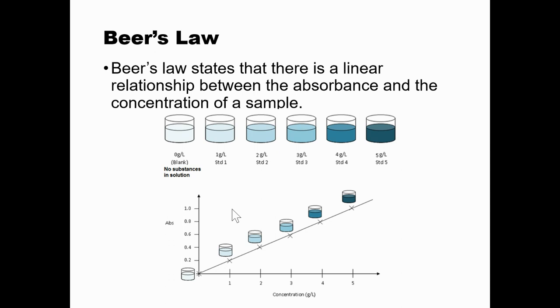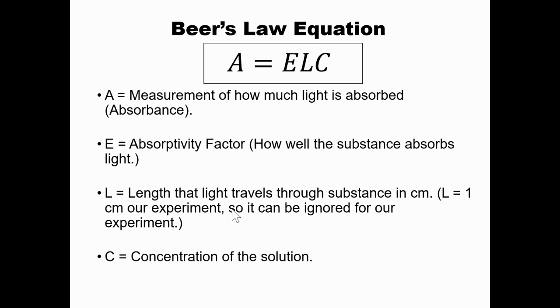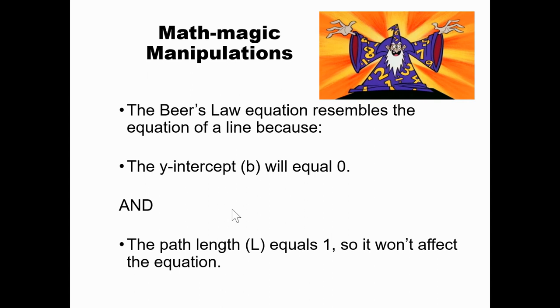So what does this Beer Law's equation mean? A is the measurement of how much light is absorbed. So that's the absorbance. E is the absorptivity factor. And that's just how well the substance absorbs light. L is the length that light travels through the substance in centimeters. And so in the experiments that are used in a spectrophotometer, it's almost always one centimeter. And so for the most part, you can just ignore that because one times anything is just whatever it was. And C is the concentration of the solution. Concentration would be in terms of how much substance is there per amount of solvent, amount of liquid. In our example, we were doing grams per liter. And so we have to do some math magic manipulations because the Beer's Law equation resembles the equation of a line because the y-intercept B will equal zero and the path length L equals one. So it won't affect the equation.